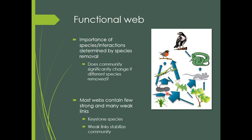Most food webs contain relatively few strong interactions — the big thick arrows — and a whole lot of weak links, shown by thin arrows. Keystone species are those connected by those strong thick arrows. Importantly, the more weak links you have, the more stable the community can be. If the grasshopper population fluctuates, a mouse's ability to also eat acorns from an oak tree provides an additional food source that stabilizes that mouse population. Weak links often have the ability to stabilize the community.